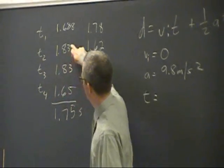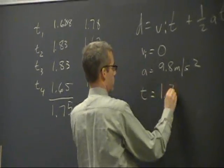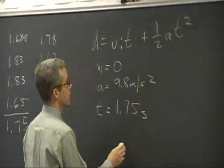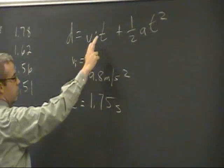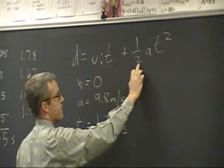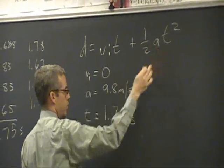We have three significant figures because that's the least of these. Now we can put that in for our time, 1.75 seconds. So now we've got our VI is zero, 1.75, one half, 9.8, 1.75.